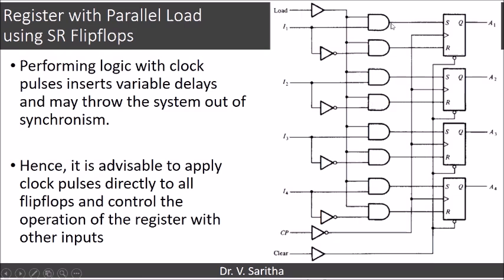If load equals 1, we have to get S as I1 and R as I1 bar. That is, if I1 equals 1, then S will become 1 and R will become 0. If I1 equals 0, then S will become 0 and R will become 1. We have S equal to 0 and R equal to 0 when load is equal to 0. We should not get the case of S and R both being 1, because if S and R are both 1 it is an indeterminate state. That is why we are giving a NOT gate in this connection to the AND gate at the R input — to reduce the delay between the load input and the master clock pulse given to the flip-flops.